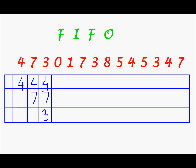Next, I have to bring in 0. And to get in 0, I have to remove one of these pages. Now FIFO, as the name suggests, the first one that was brought in shall be the first to leave. So out of 4, 7, and 3, the first to enter was 4, and that shall be the first to leave. So in place of 4, I shall write 0. 7 and 3 will be where they were.